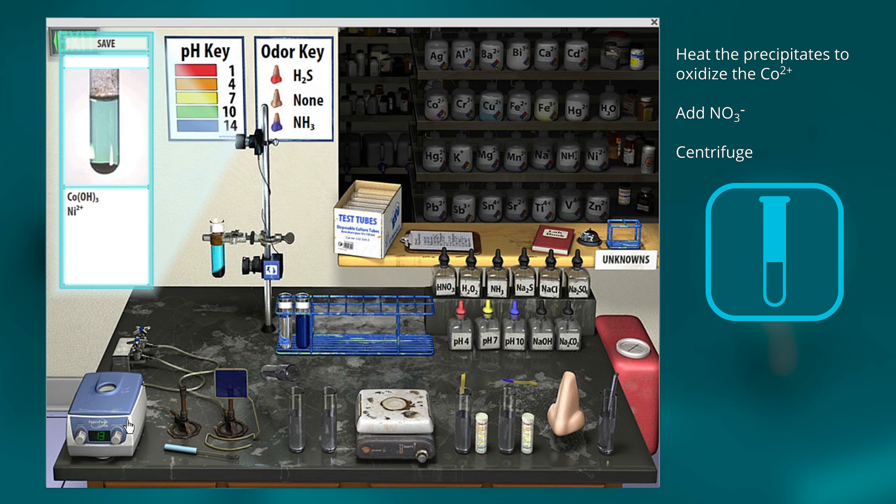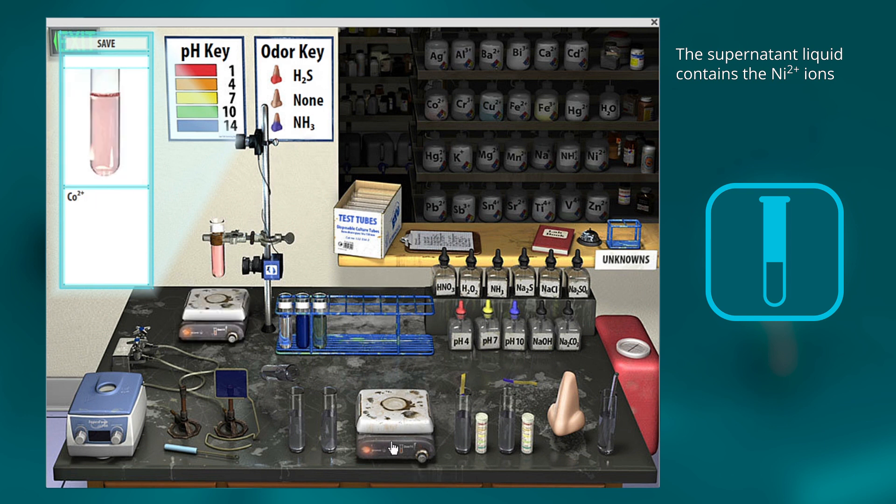So now when we centrifuge and decant, now we have our nickel separated off, and our cobalt is in here. It's still in the oxidized state, so if you want to take it back, you can add heat again, and that takes it to the original oxidation state that we started with.